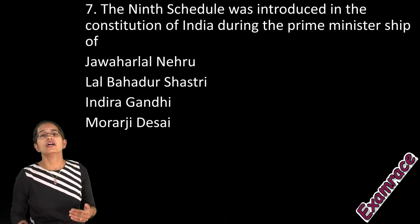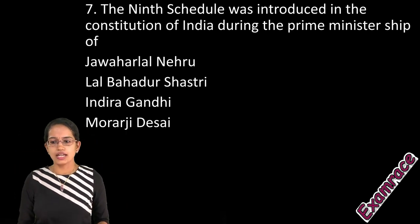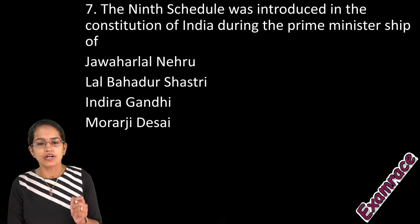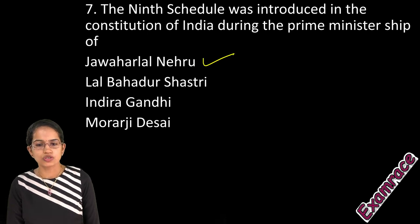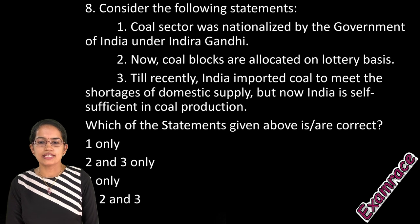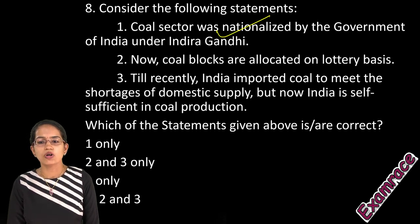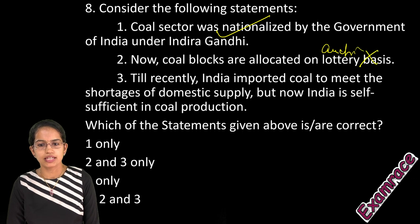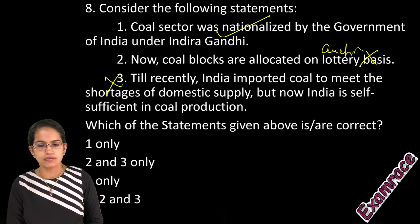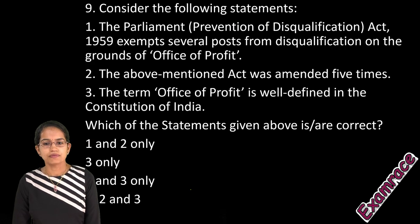The Ninth Schedule was laid down by Jawaharlal Nehru and focused mainly on the chapter on fundamental rights, so Jawaharlal Nehru is the right option. The coal sector was nationalized by Indira Gandhi — that is correct. However, coal is now allocated on an auction basis, so that statement is incorrect, and we are still importing coal, so the third is also incorrect. Only option one is correct.